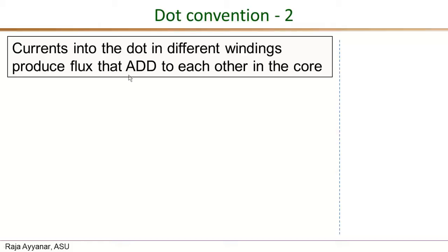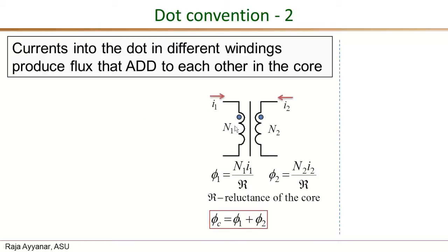Using that, here is the dot configuration for a given transformer. If current I₁ in winding one is entering the dot, and current I₂ in the secondary winding is also entering the dot, then the individual fluxes due to each of these currents add in the core, resulting in Φ_C — the core flux — equal to Φ₁ plus Φ₂.